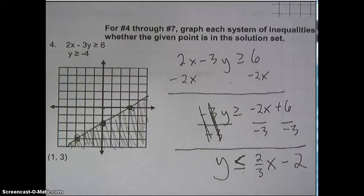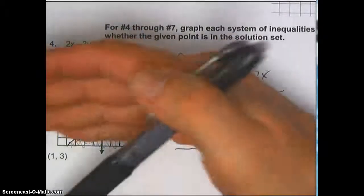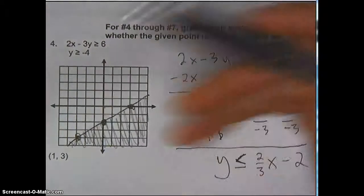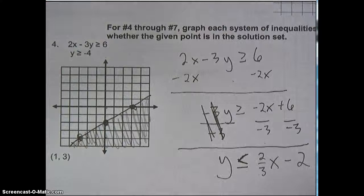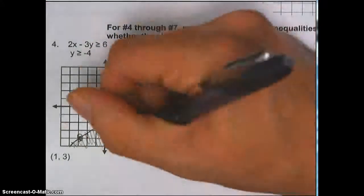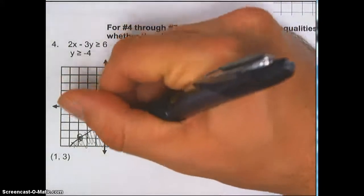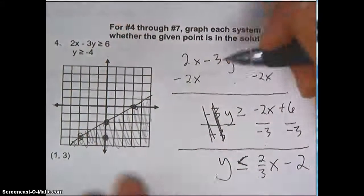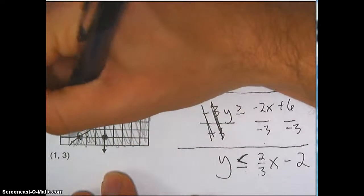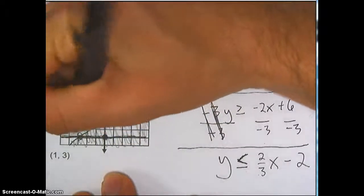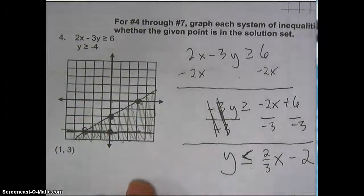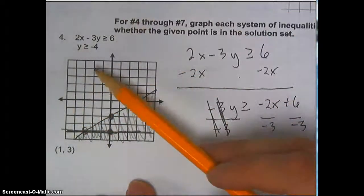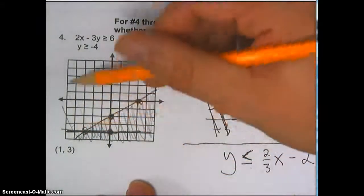All horizontal lines are always of the form y equals. So y equals negative 4 — put a point at negative 4 and draw a straight horizontal line. It's a solid line because it says greater than or equal to. And I'm going to shade the area above because y is greater than, so shade the area above.